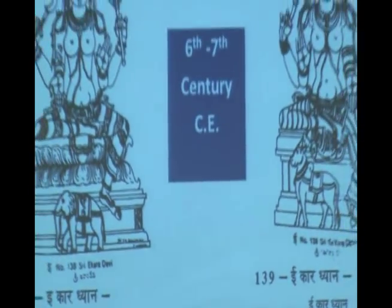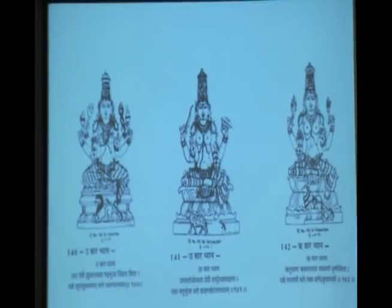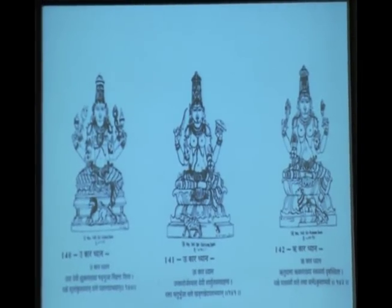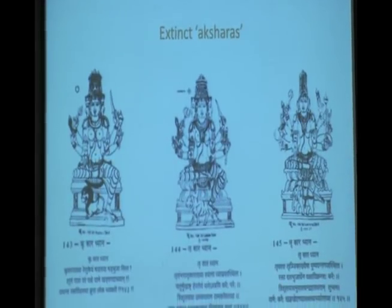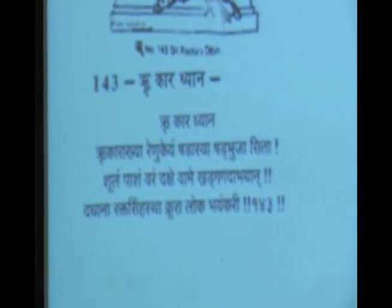The iconographic representations also state that every letter form has a goddess associated with it, and shlokas or hymns were written in praise of every letter form. That is the reason why having knowledge of these letter forms was considered very sacred in the country. These letter forms like 'lu' are no longer taught in the Indian education system, but the charts show us that hundreds of years ago these particular letter forms existed.